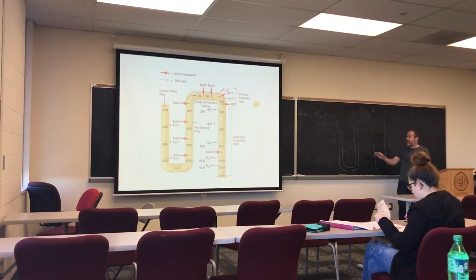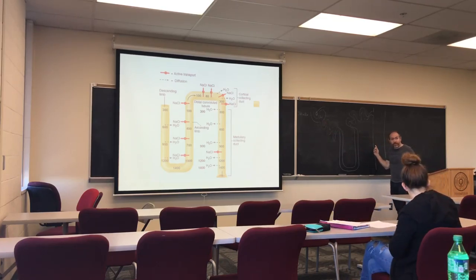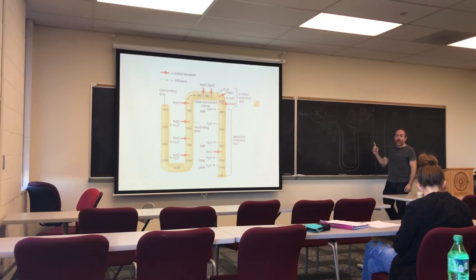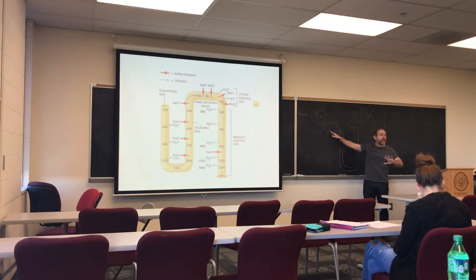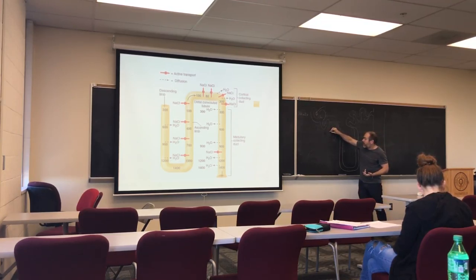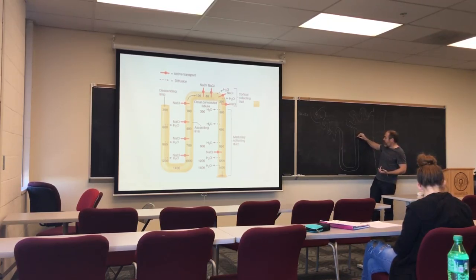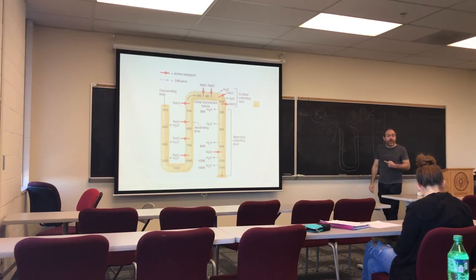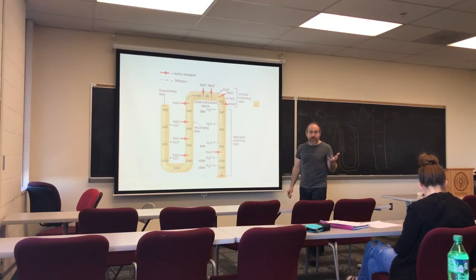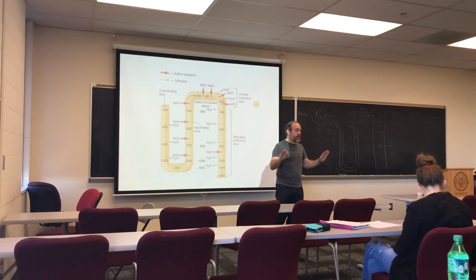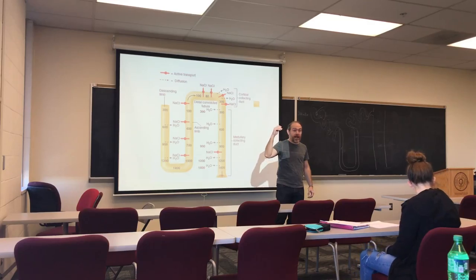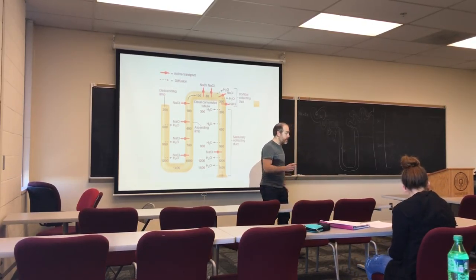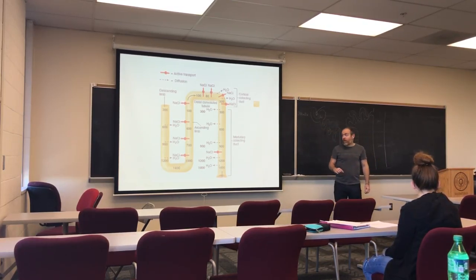If the tubule epithelium were completely impermeable — nothing going in or out — the filtrate concentration throughout all parts of the nephron would remain at 300 milliosmoles, and the resulting urine would also be 300 milliosmoles. This urine is very diluted. While there is nothing physiologically wrong with dilute urine, the problem is that you would lose a lot of water.